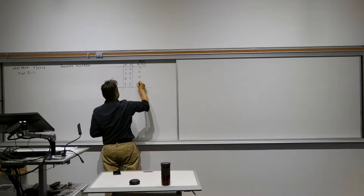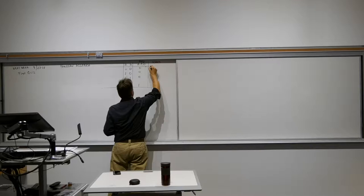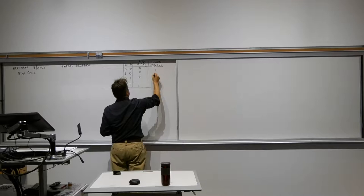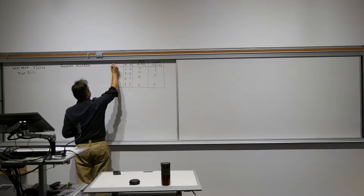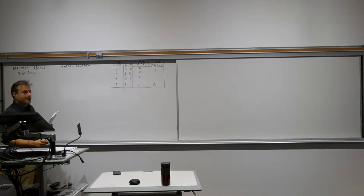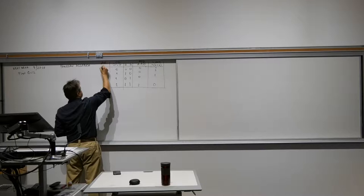We talked about NOT(A AND B), which would be the opposite: one, one, one, zero. And then we have OR — A OR B — which is zero, one, one, one. OR is one when at least one of them is one. And then we have XOR, which is one exactly when exactly one of them is one.